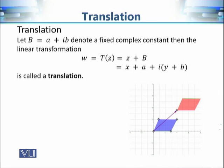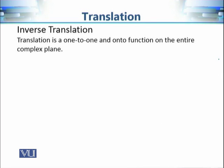In this picture we can see the images from the z-plane and images from the w-plane in the same complex plane, which helps us in understanding the behavior of the function more efficiently. Translations are one-to-one and onto functions on the entire complex plane, so we can talk about the inverses of these linear transformations. If w = T(z), then w is the output and z is the input.